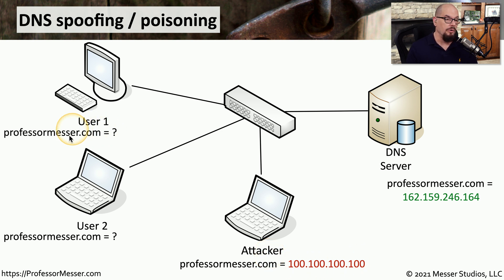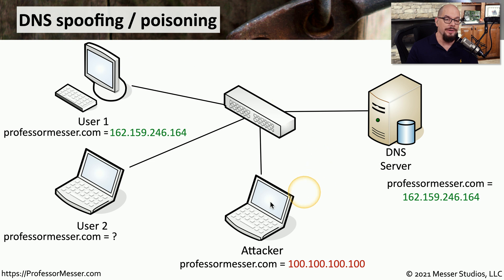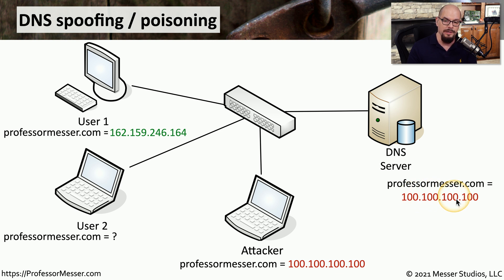User1 is going to perform a DNS query where they'll ask the DNS server: what is the IP address for ProfessorMesser.com? The DNS server is going to respond back with that answer, and User1 is going to put that information into the DNS cache on their local machine. The attacker is now going to gain access to this DNS server and modify the DNS configuration files so that this DNS believes that ProfessorMesser.com is located at 100.100.100.100.